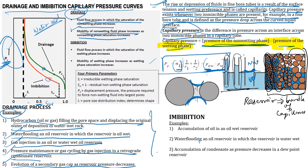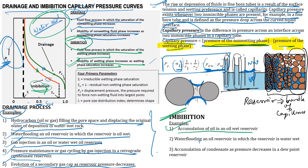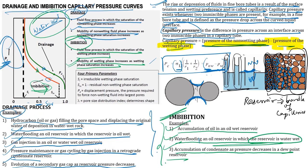Imbibition is the fluid flow process in which the saturation of the wetting phase increases. In the imbibition process, the red trend shows saturation increasing in the direction of higher water saturation. Examples of imbibition: accumulation of oil in an oil wet reservoir; water flooding in an oil reservoir where the reservoir is water wet; accumulation of condensate as pressure decreases in a dew point reservoir.